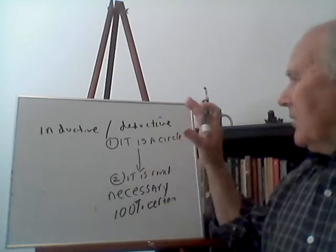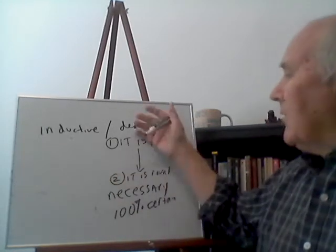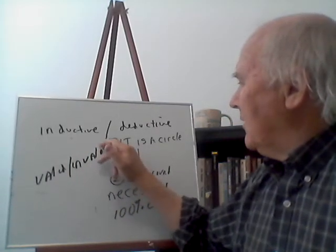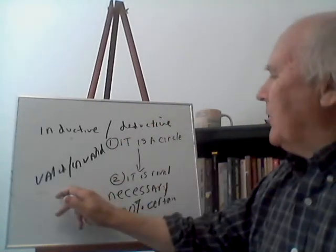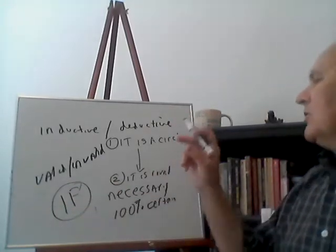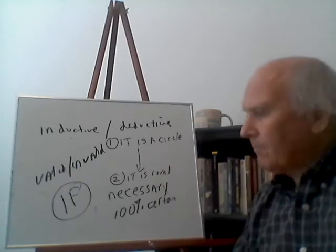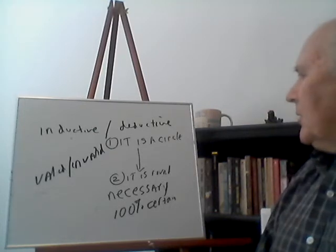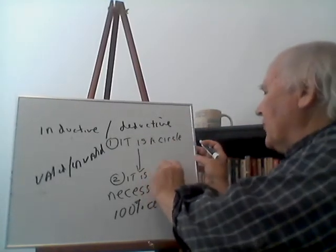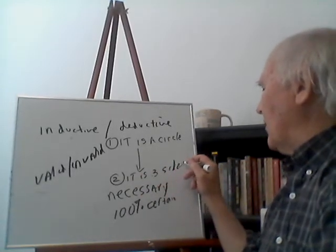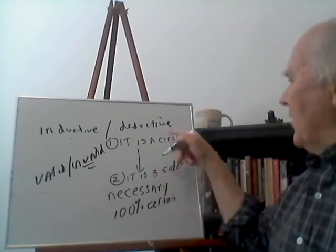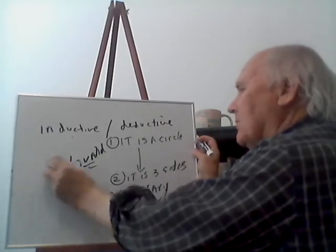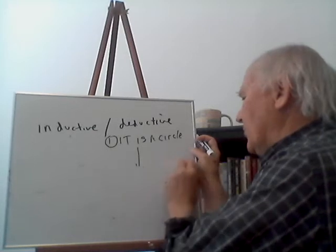In every deductive argument, if the premises are true, the conclusion — if it's a valid argument — deductive arguments are valid or invalid. In a valid deductive argument, if the premises are true, the conclusion has to be true with 100% certainty. If I said it's a circle, therefore it has three sides, that would be an invalid argument because circles do not have three sides. In a valid deductive argument, if the premises are true, the conclusion has to be true with 100% certainty.